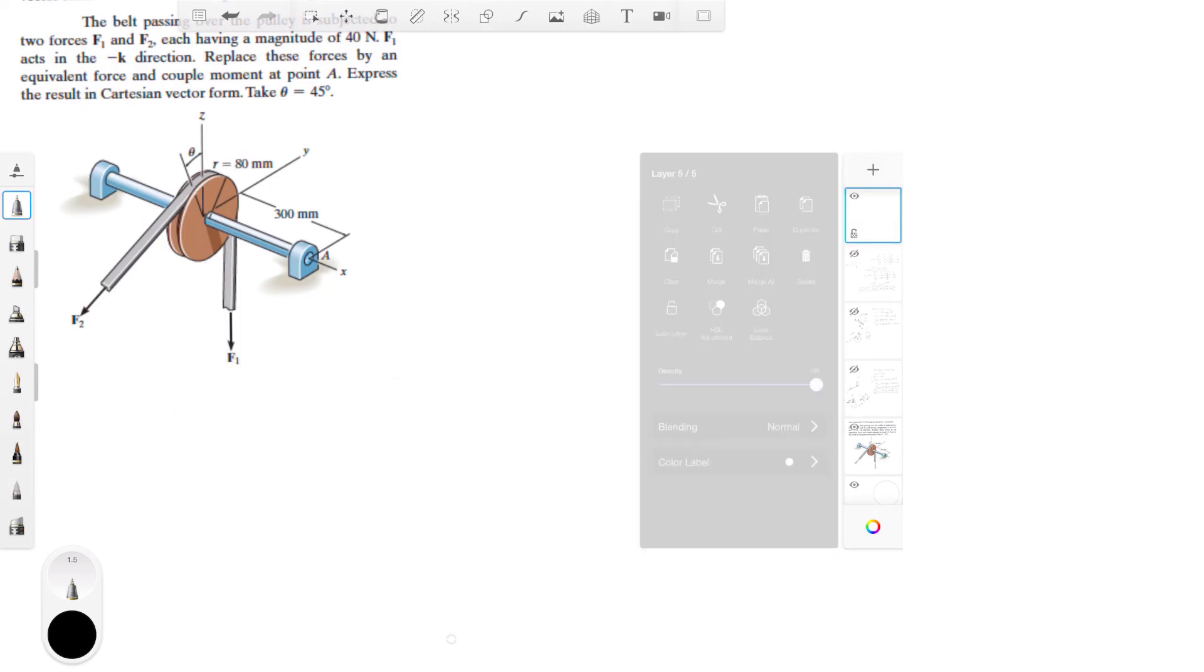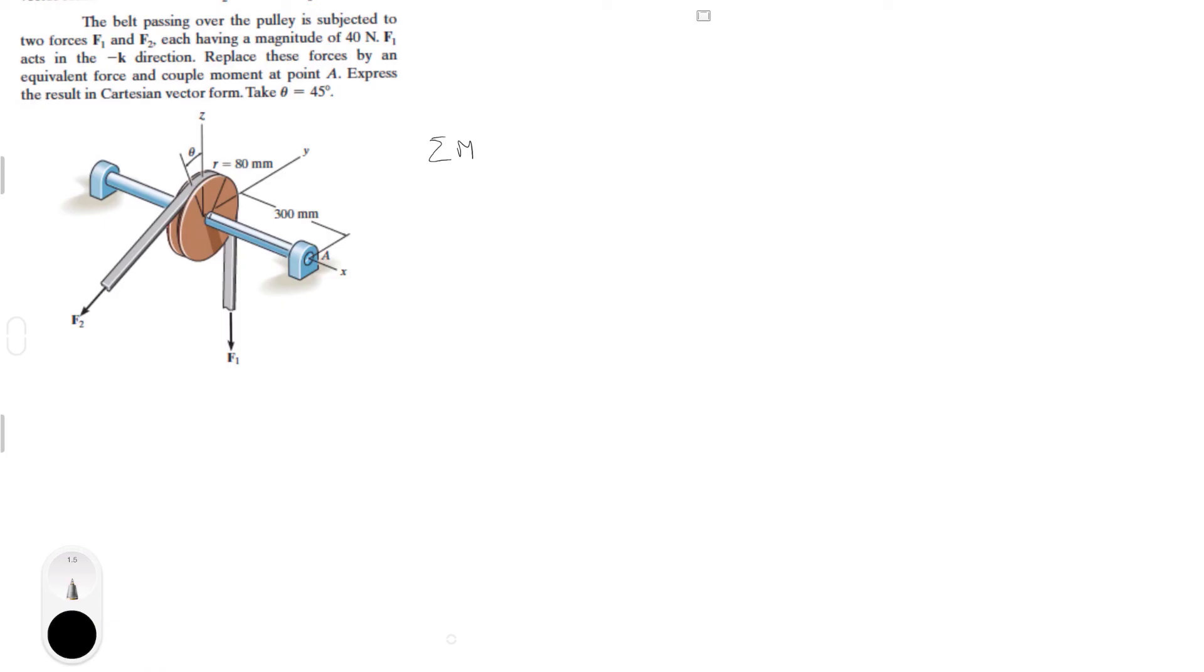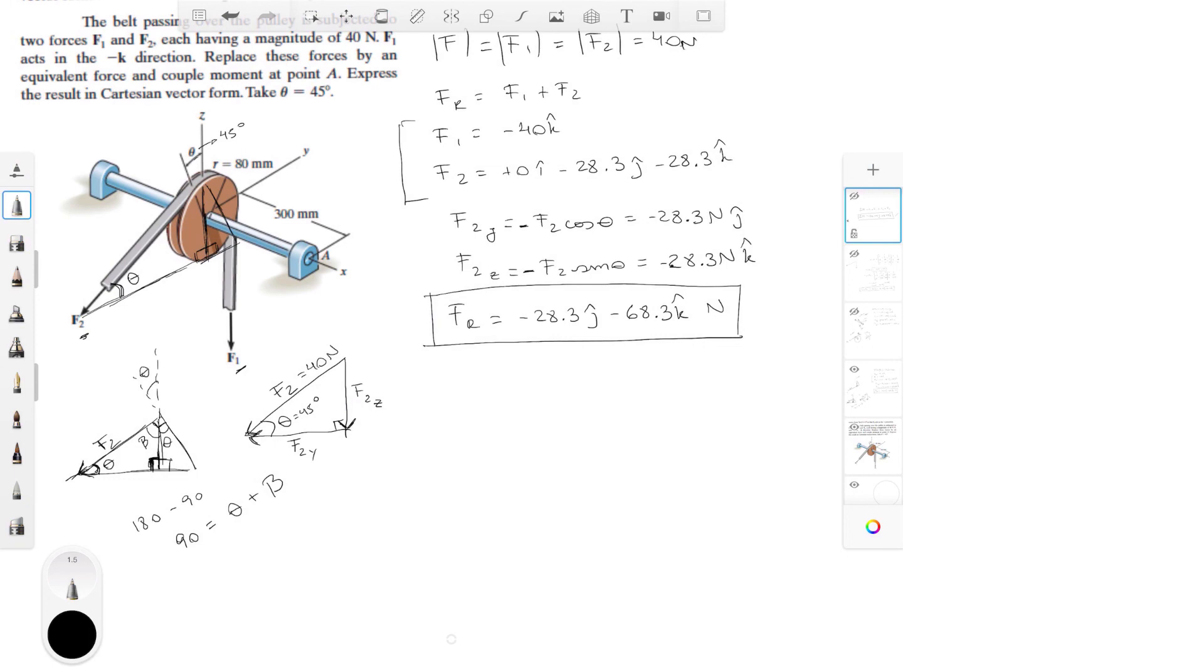Sum of the moments equals R1 cross F1 plus R2 cross F2, which means you add the two Cartesian vectors we found on the previous page together. The final answer is negative 20.49J plus 8.49K because the I's cancelled each other out. This is the final answer for the moment being created around point A by these two forces acting on the pulley. The resultant force final answer.